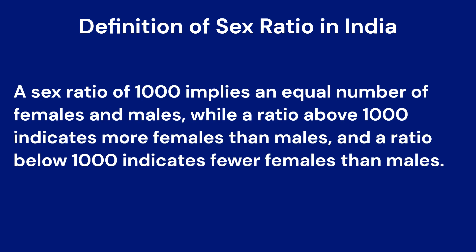A sex ratio of 1000 implies an equal number of females and males, while a ratio above 1000 indicates more females than males, and a ratio below 1000 indicates fewer females than males.